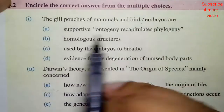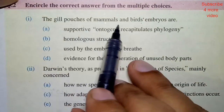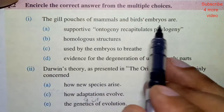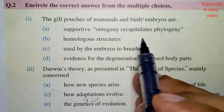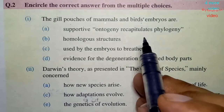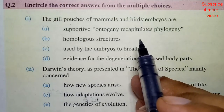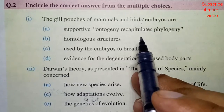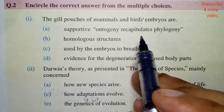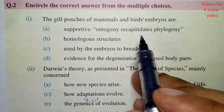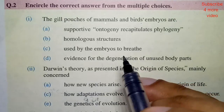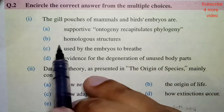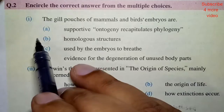The gill pouches of mammals and bird embryos — what are the gill pouches? We can consider option B: homologous structures. That is the correct answer.